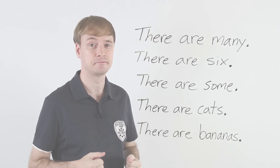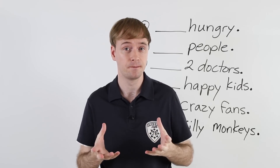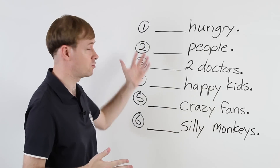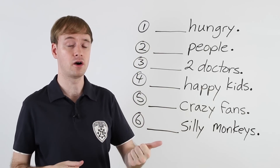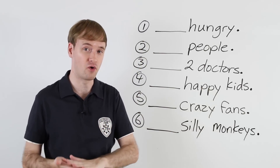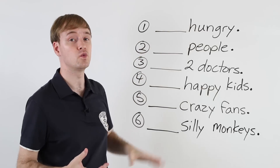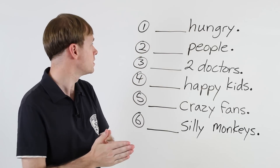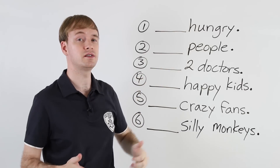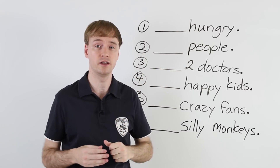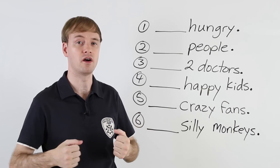It's time for a test. We're going to do it together. There are six questions. I'm going to say 'they are' or 'there are' — you have to listen carefully and pick which one I use. Number one: blank hungry. Listen carefully. They are hungry. They are hungry.